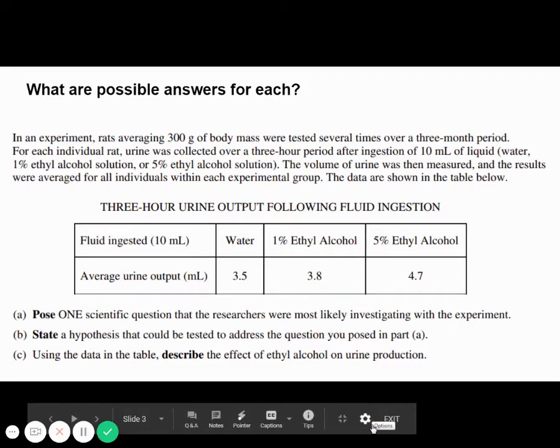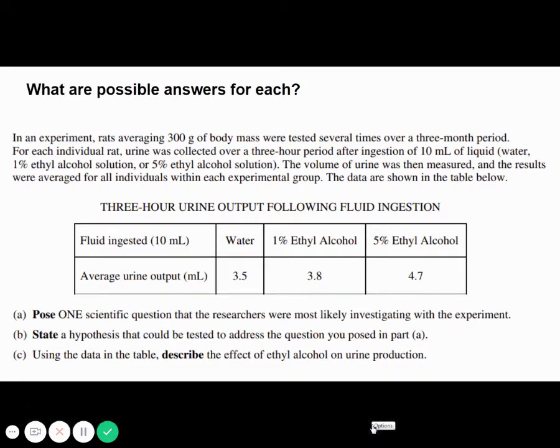So you should have come up with basically the things that are bolded. You want one scientific question, you want a hypothesis that could be tested, and then you want to describe the effects of ethyl alcohol. It's pretty straightforward.